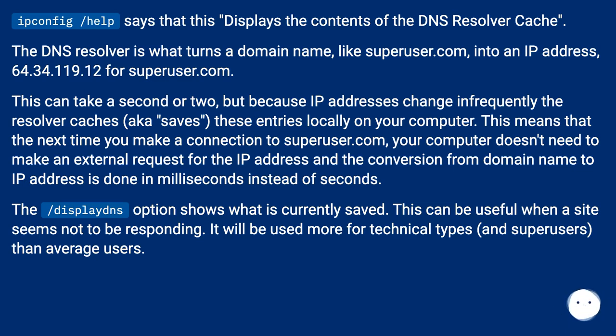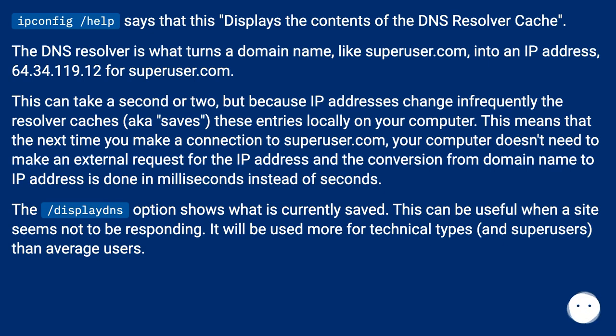The conversion from domain name to IP address is done in milliseconds instead of seconds. The /displaydns option shows what is currently saved. This can be useful when a site seems not to be responding. It will be used more for technical types and superusers than average users.